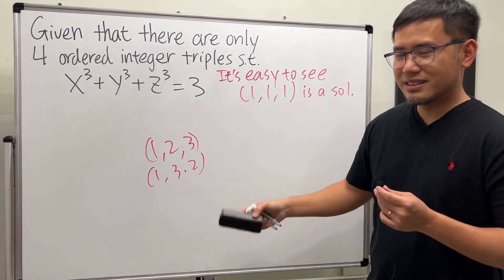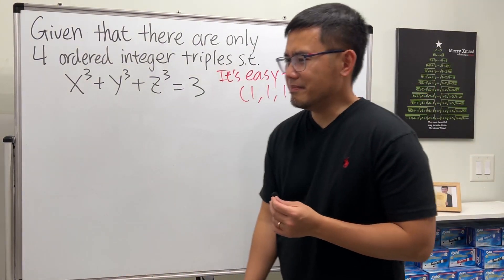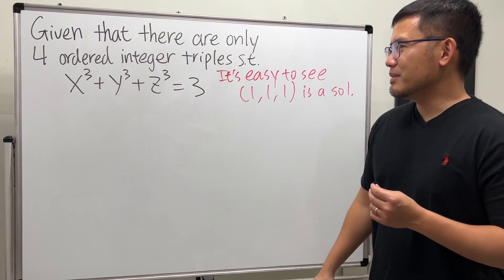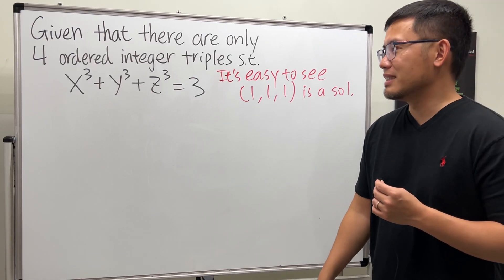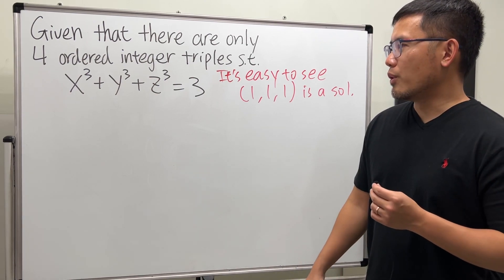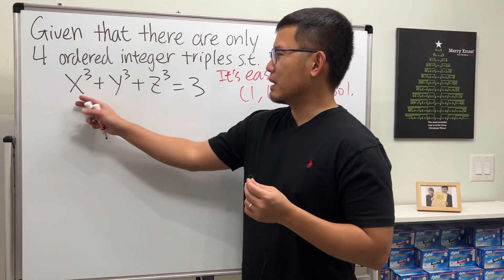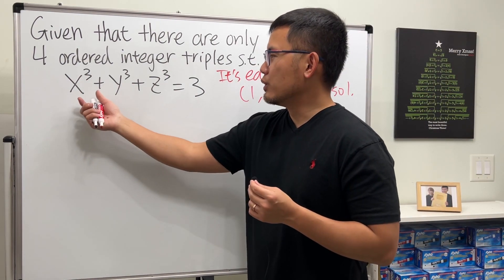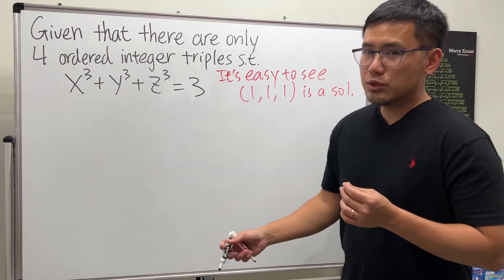You want to pause the video and try this first? Okay, so this is how you can do it. I think if you want to just get the question right on a MathD contest, you can just test things out. And of course, we are looking for perfect cubes. Either one of them is negative or two of them is negative. So just keep that in mind.